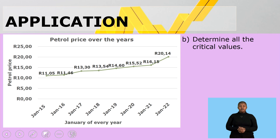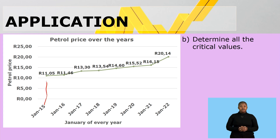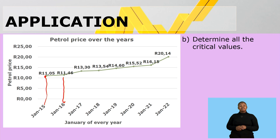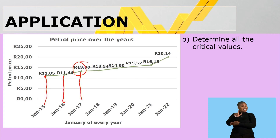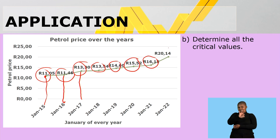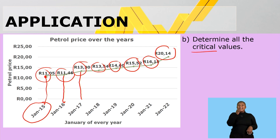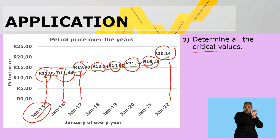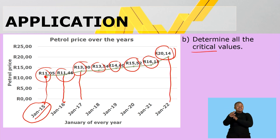Determine all the critical values. The critical values would be: January 2015 is 11 rand 5 cents, January 2016 is 11 rand 46, January 2017 is 13 rand 30, and so on. Remember, a critical value is where one variable can only have one specific other value. So from January 2015 at 11 rand 5, going up to January 2022 at 20 rand 40 — all those values can be seen as critical values.